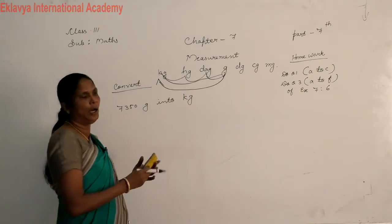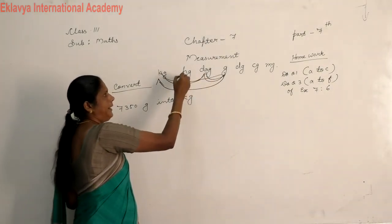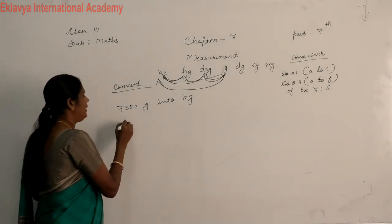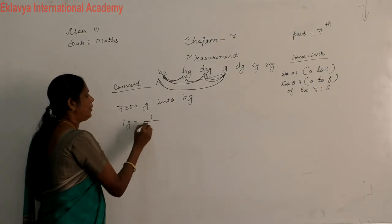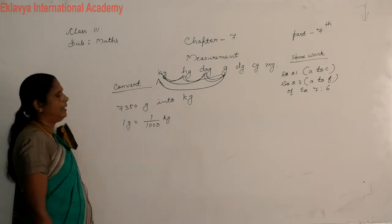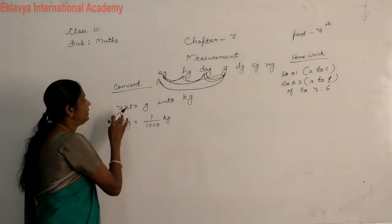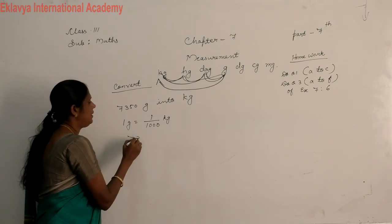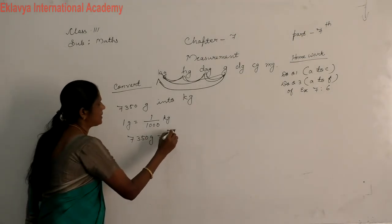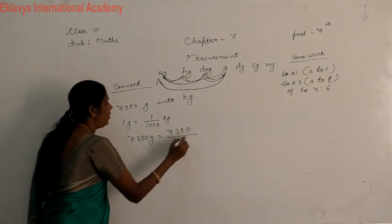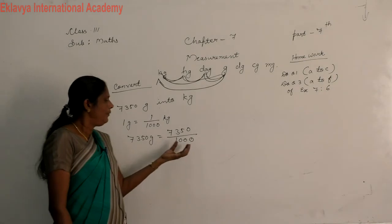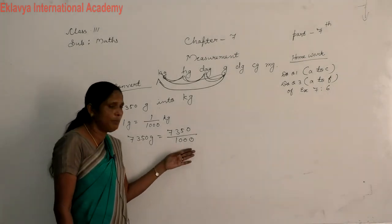Smaller to bigger. How many jumps we? 10, 100, 1000. We divide by 1000. Our 1 gram is equal to 1 upon 1000 kg.